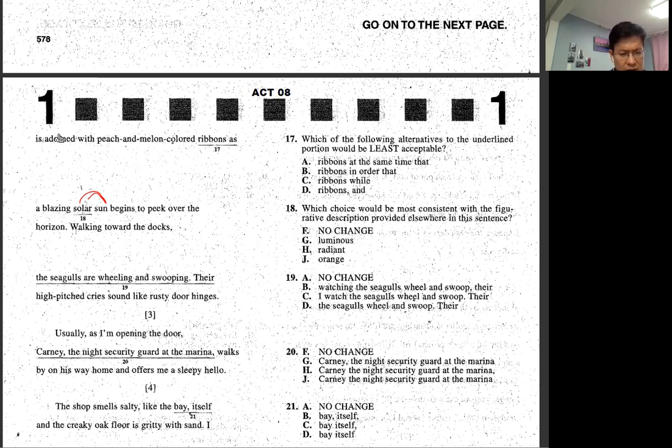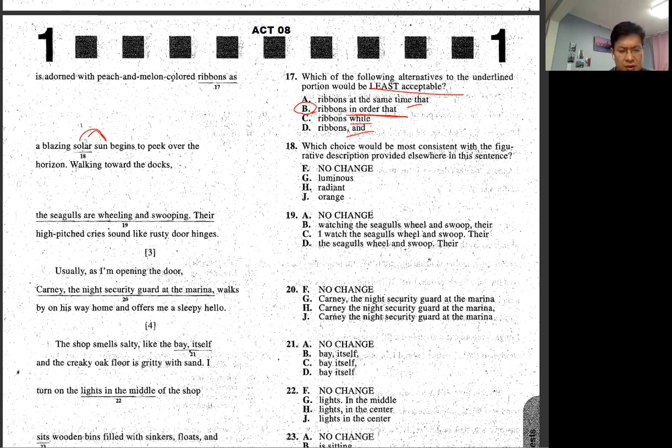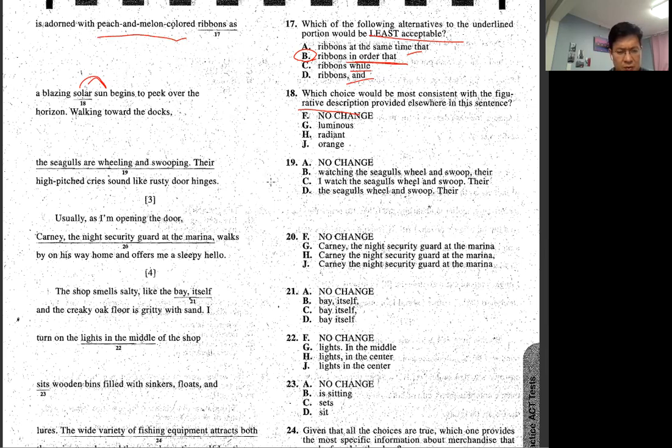And then we're going to talk about this one first. Adorned with peach and yellow, melon-colored ribbons as least acceptable. At the same time, I think that's B. In order that is different meaning. This is all talking about time, and then in order that is sort of giving us purpose and reason. Most consistent with the figurative description, figurative description. This is a peach, melon-colored, right? So something that the color that we have to see, which is orange.